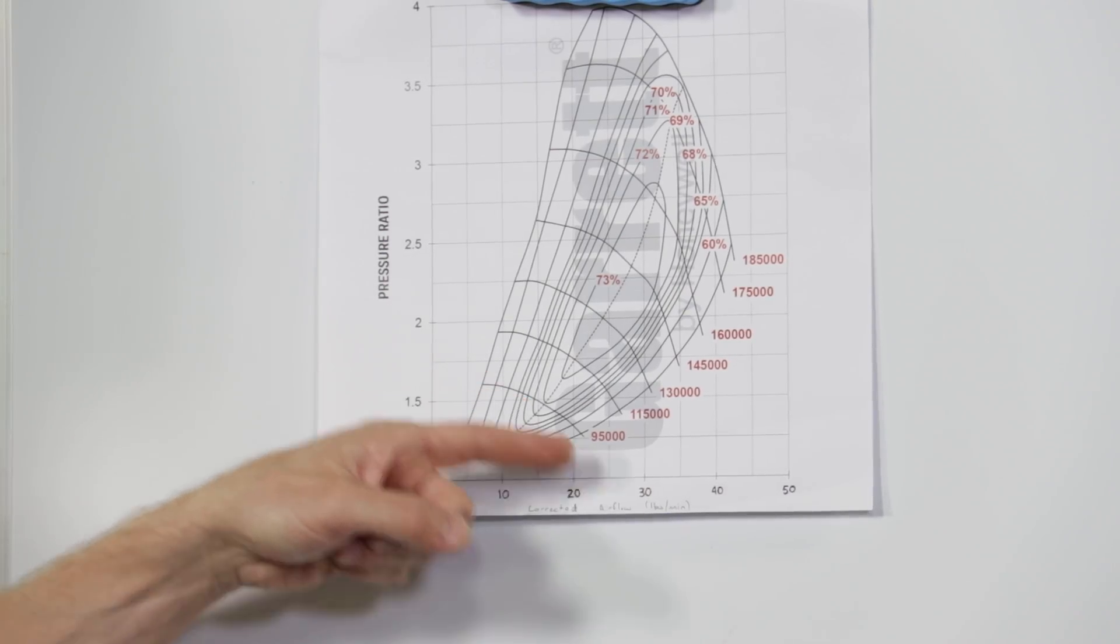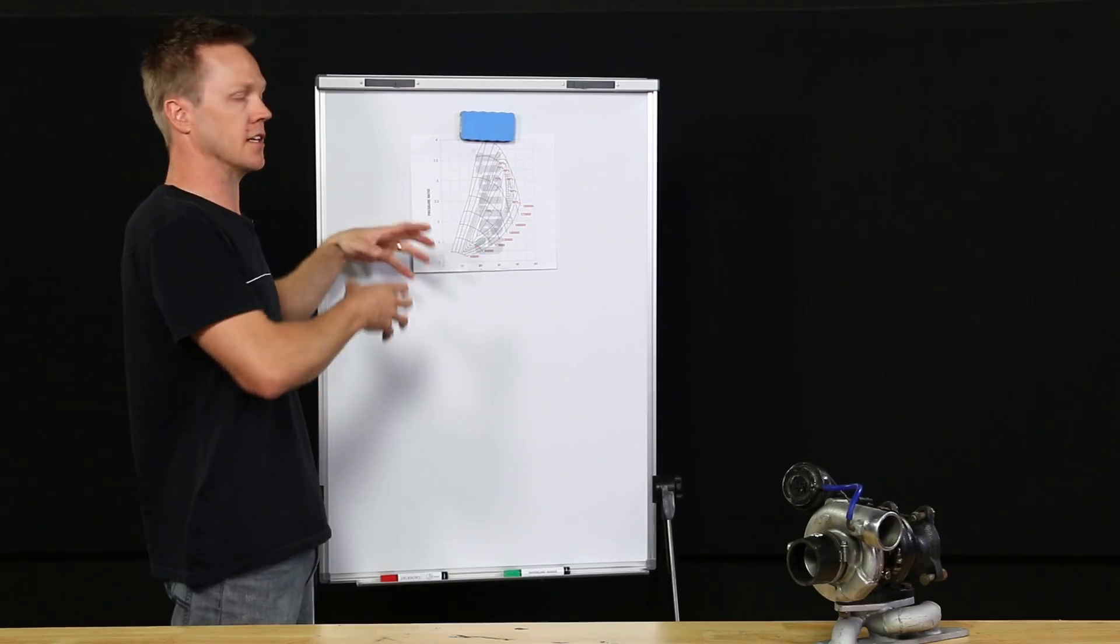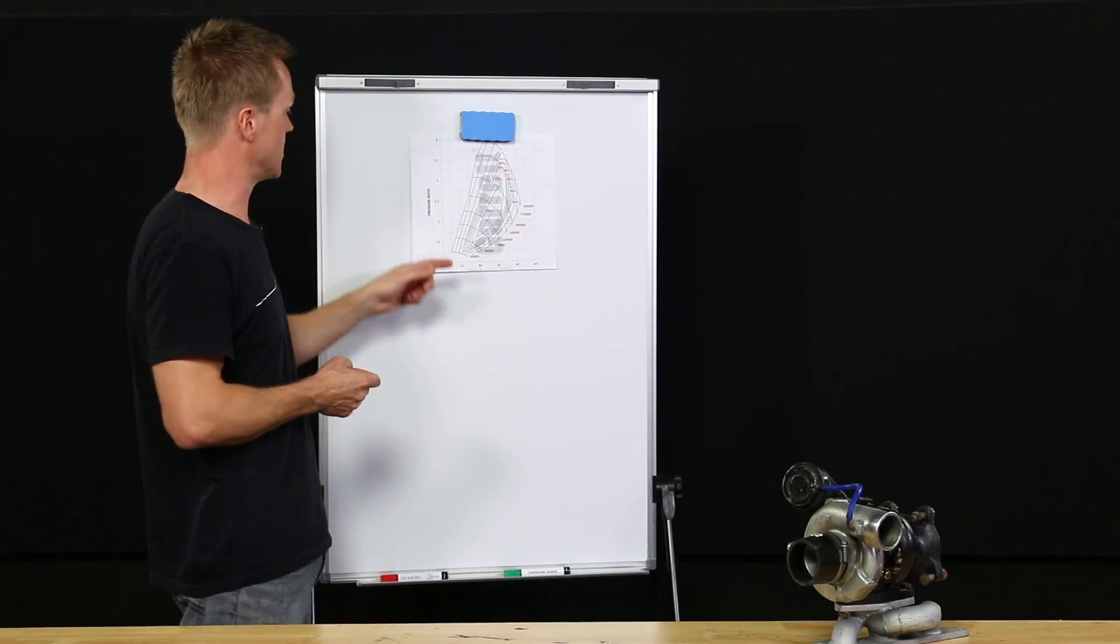These lines along here are the turbo RPM. So basically that is how fast your compressor is spinning.